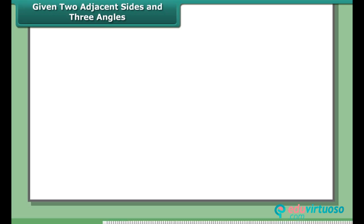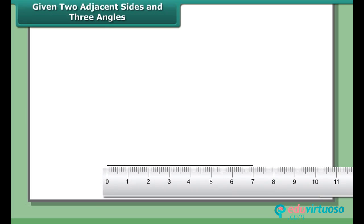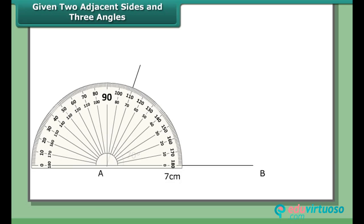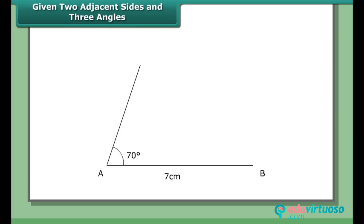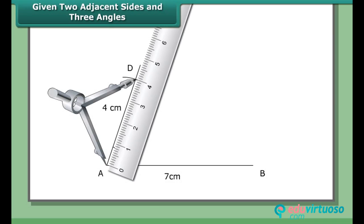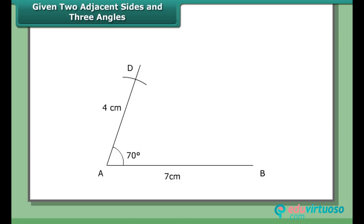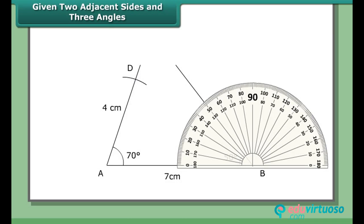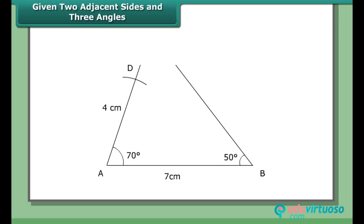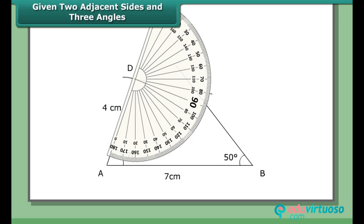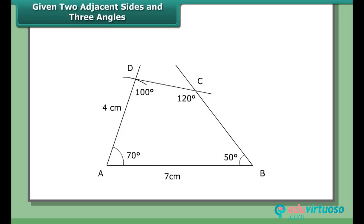Step 1: Draw line segment AB = 7 cm. Draw angle A = 70° using a protractor. With A as center and radius 4 cm, cut an arc on the line. At B, draw an angle of 50°. At D, draw an angle of 100° with a protractor. Let the arms of these angles meet at C. ABCD is the required quadrilateral.